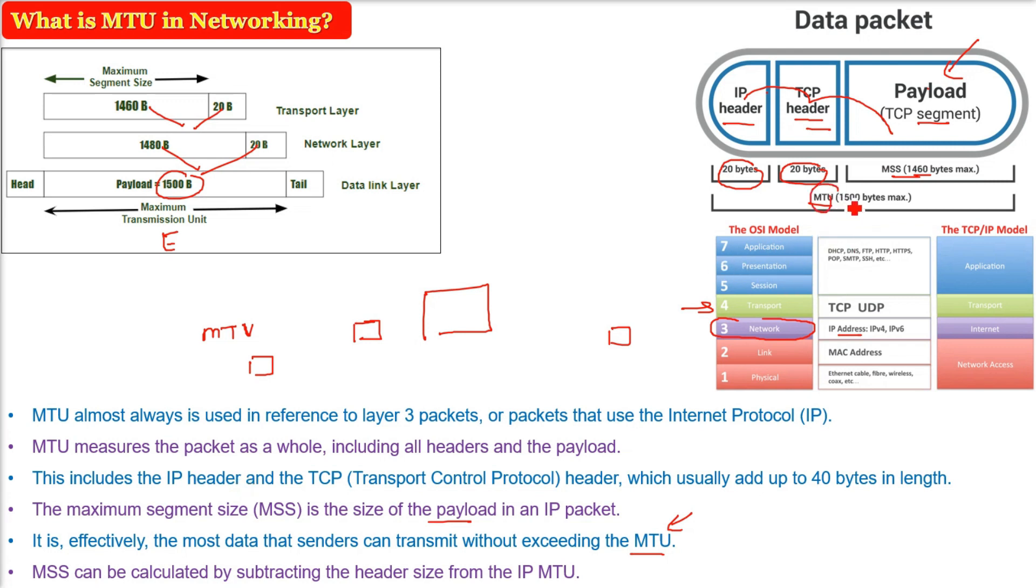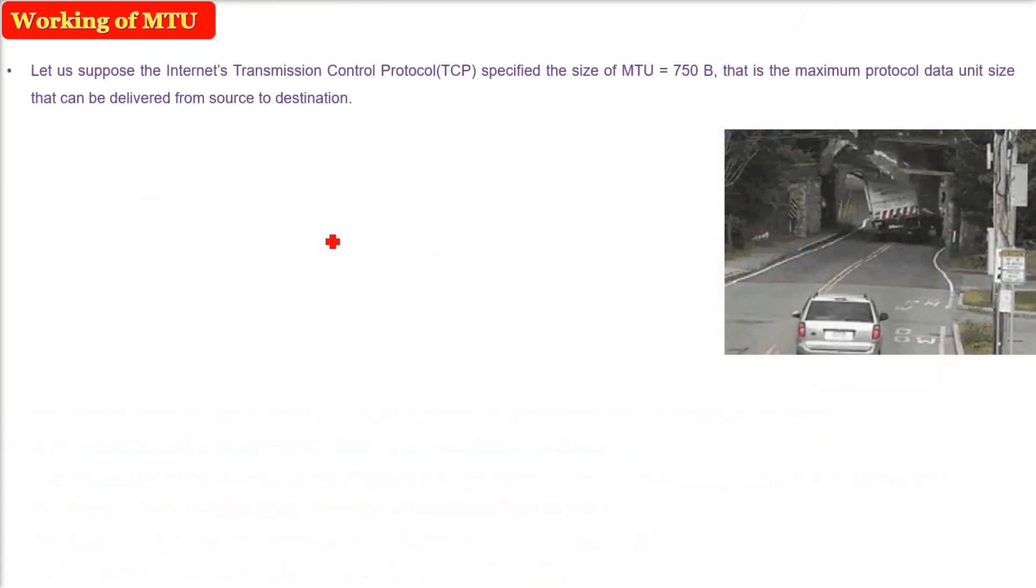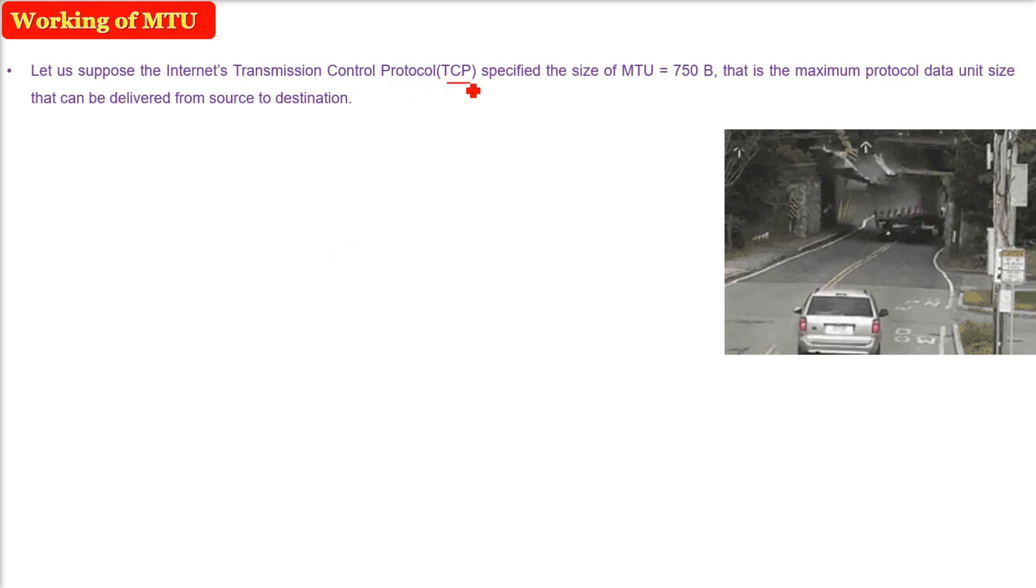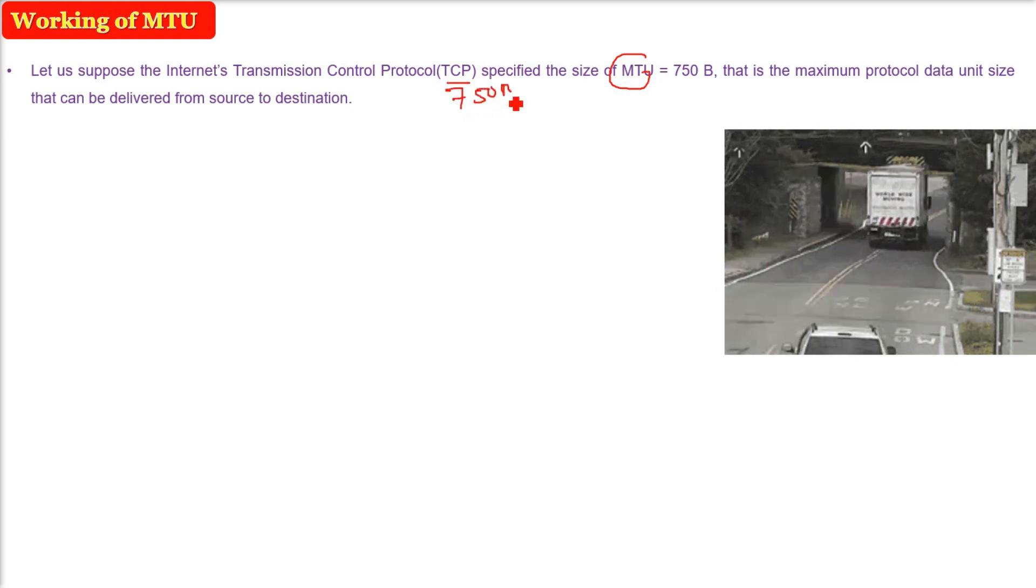So how will you find the MSS? MSS can easily be computed by subtracting the header size from the IP MTU. Let us take a very small example. Let us suppose that the Internet TCP, that is the Transmission Control Protocol, specified the size of the MTU as 750 bytes. This is just an example. 750 bytes is the MTU, that is the maximum protocol data unit size that can be delivered from one point to another or source to destination.